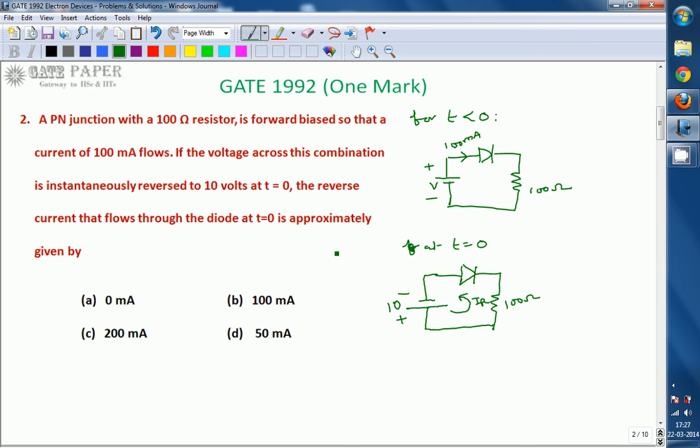This is mainly due to accumulation of stored excess minority carrier charge when the diode was in forward bias. So whenever it is instantaneously changed, at T equals zero, it is acting as short circuit itself.